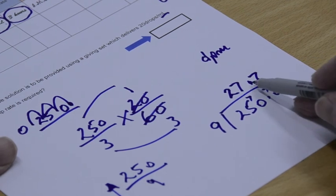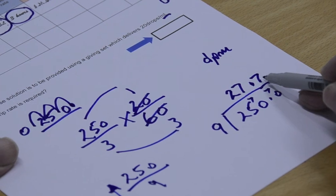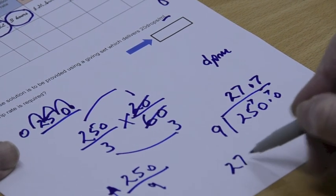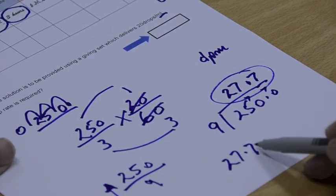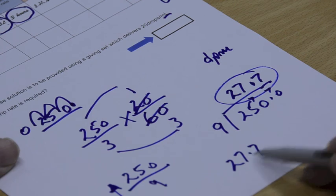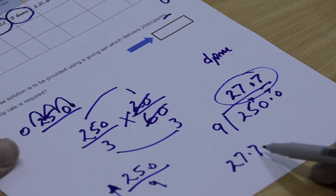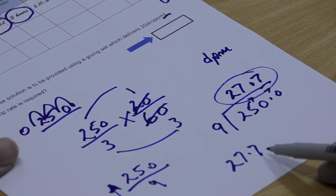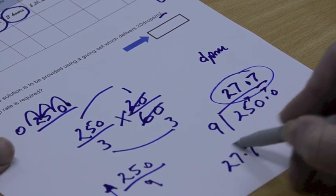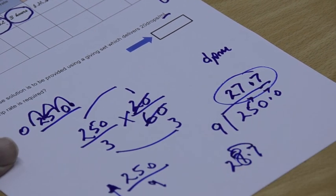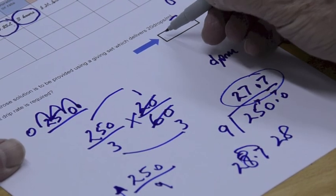So now the thing to do here is, as this figure here, 7, is more than 5, we've got a figure of 27.7 as our answer. But we need to round this up. Why? Well, because you can't really have 0.7 of a drip. Either something drips or it doesn't drip. You can't have a bit of a drip. So that's 5 or more. So we've got to round that up to 28. 28 drops per minute. And that would be our answer.